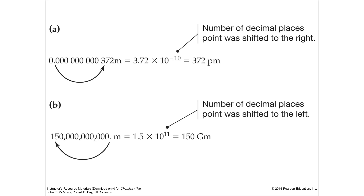Section 1.5, Uncertainty in Measurement. There are two types of numbers. You have exact numbers, which are either defined or counted.